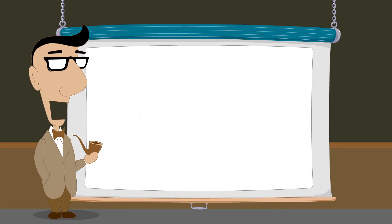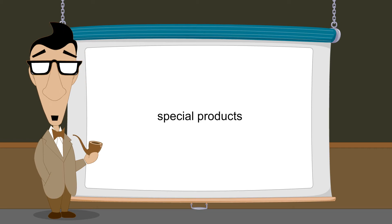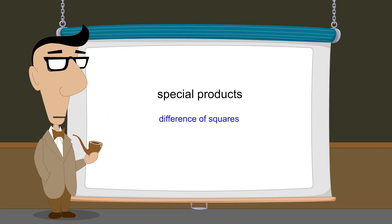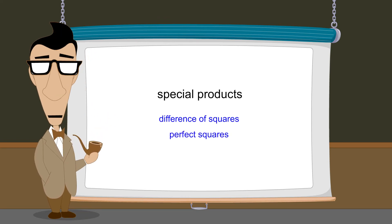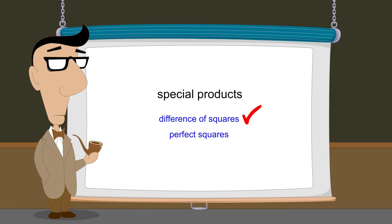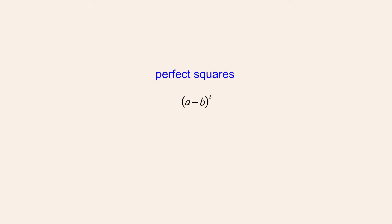We showed in the previous lecture that there are certain forms of quadratics called special products whose factors can be easily identified. These special products include quadratics that are the difference of squares and quadratics that are perfect squares. We have already seen how to identify and factor quadratics that are the difference of squares. In this lecture, we will see how to identify and factor quadratics which can be written either as a plus b quantity-squared or a minus b quantity-squared.